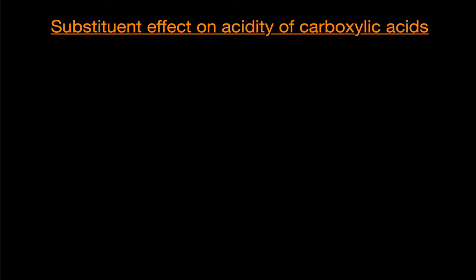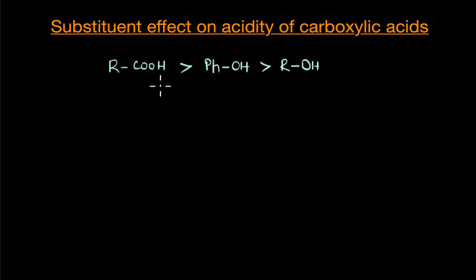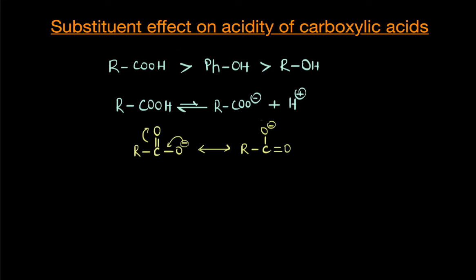From the previous video, we saw that carboxylic acids are among the most acidic organic compounds. Carboxylic acids are more acidic than phenols and much more acidic than alcohols. And this is because the conjugate base of the acid, which is the carboxylate ion, is resonance-stabilized.